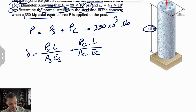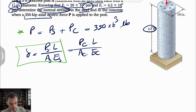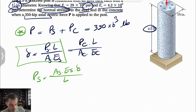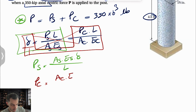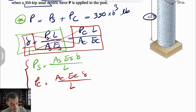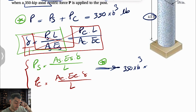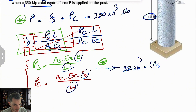Based on each of these, we can find P from delta, L, area, and elastic modulus and put them into the equilibrium equation. By cross-multiplying, we get: P_S = A_S · E_S · (delta/L) and P_C = A_C · E_C · (delta/L). Substituting into the main equation, 350 × 10³ equals (A_S · E_S + A_C · E_C) · (delta/L).